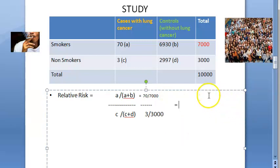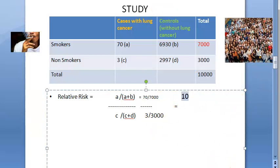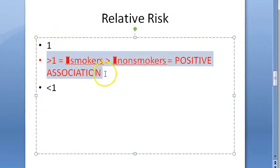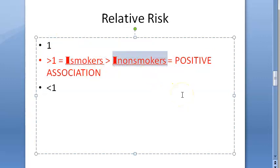The answer is 10 divided by 1, so the relative risk is 10. This is the direct measure of the strength of association between the cause and the effect. If the relative risk is 1, there is no association. If it is greater than 1 — as in this case where we got 10 — the incidence among smokers is greater than among non-smokers, so there is a positive association.